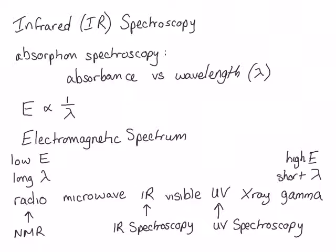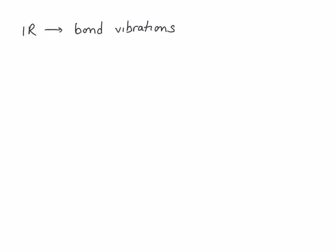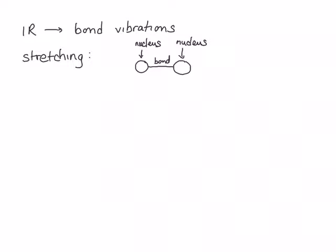When molecules absorb IR radiation, this causes vibration of the bonds within the molecule. The exact wavelength of the light absorbed tells us something about the energy of those bonds, and that can give us information about the functional groups that are present or absent in the molecule. The main movement that we're talking about is stretching. If you think of two atoms in a bond as two balls on a spring, stretching movement is the movement away and towards one another that the nuclei do.